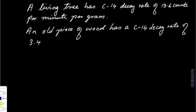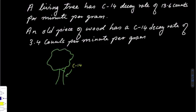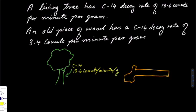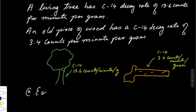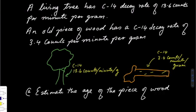There is a living tree there with a decay rate of 13.6 and a dead piece of wood with a decay rate of 3.4 counts per minute per gram. Now we are required to estimate the age of a piece of wood if the half-life is 5730 years.